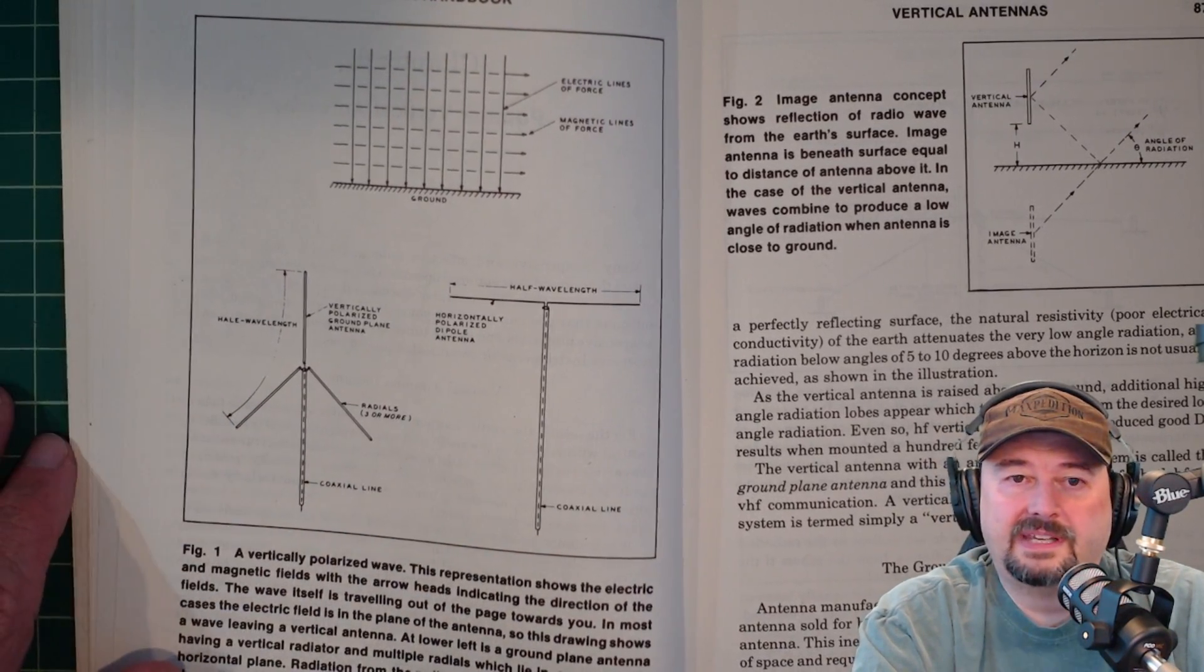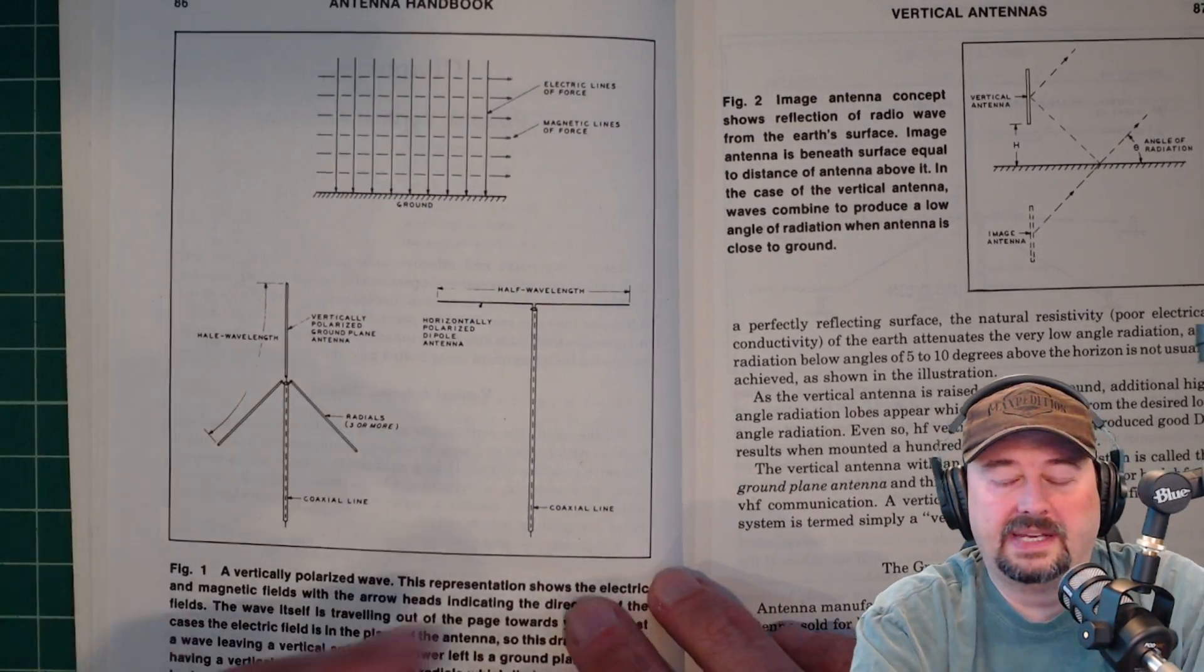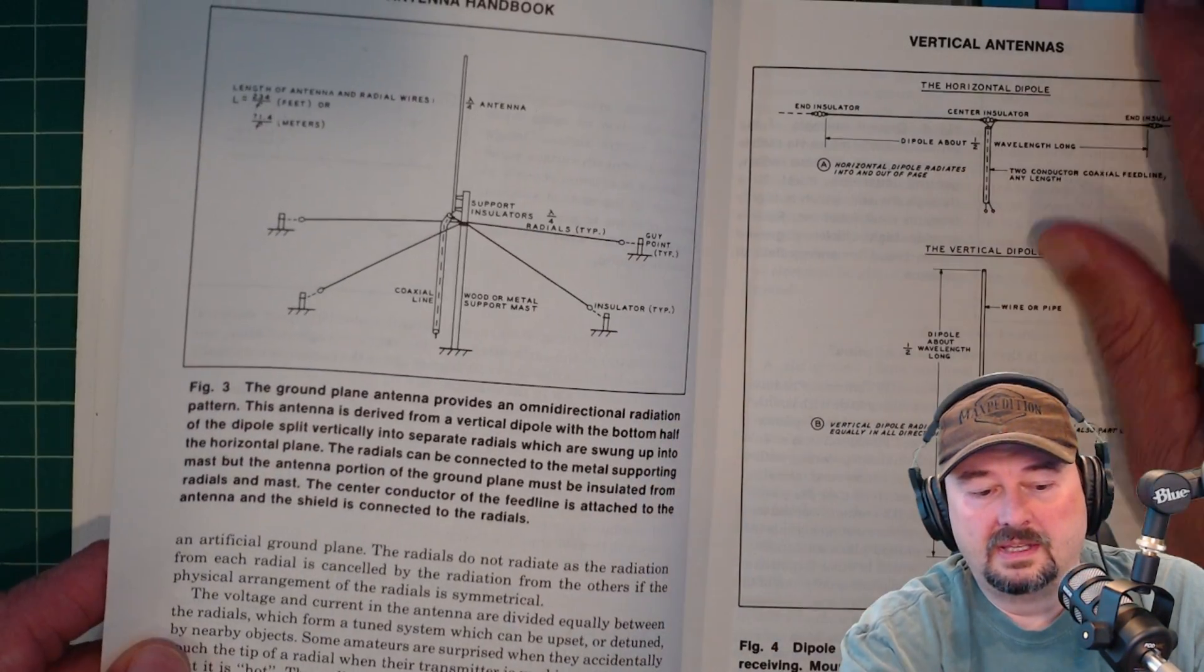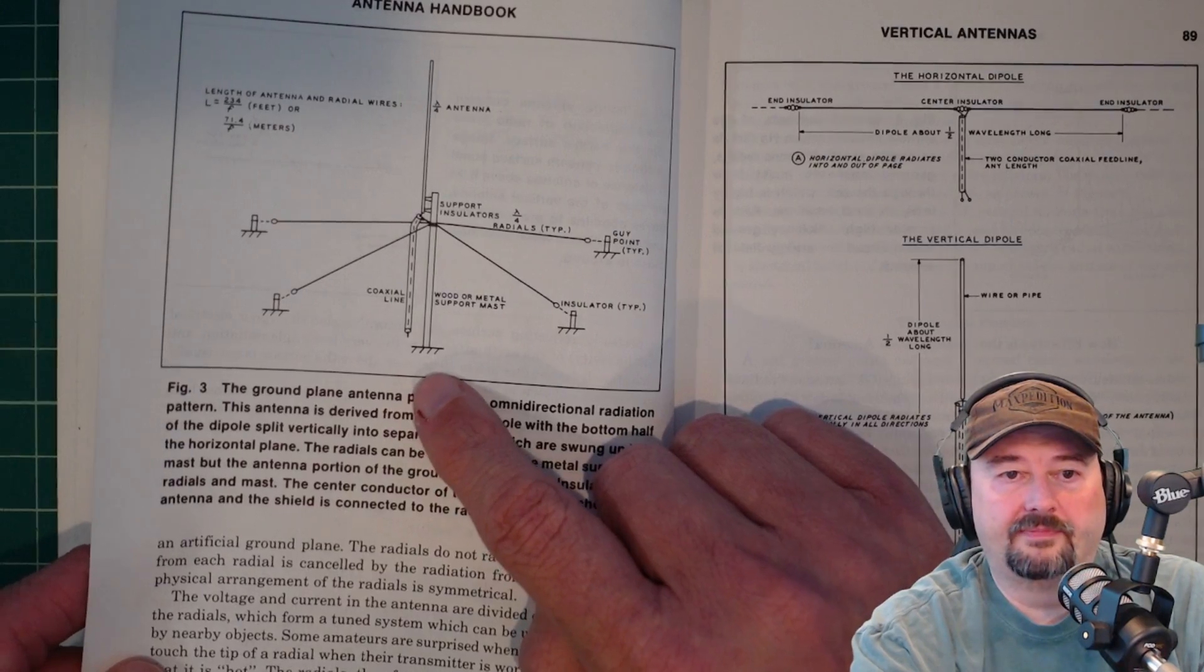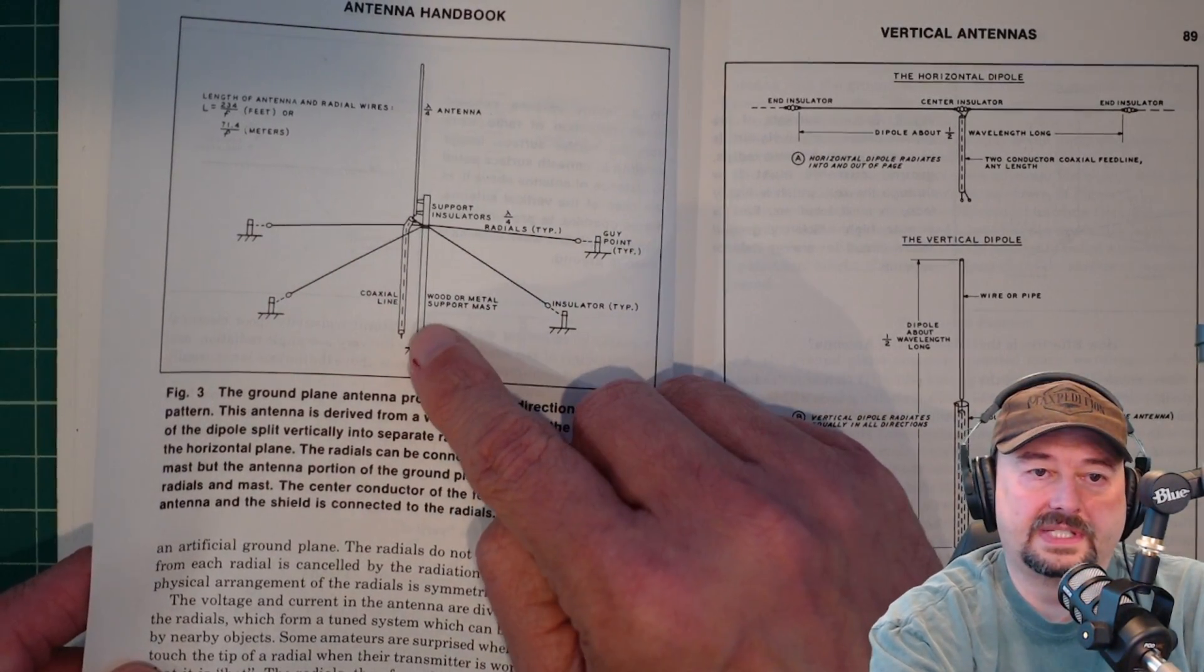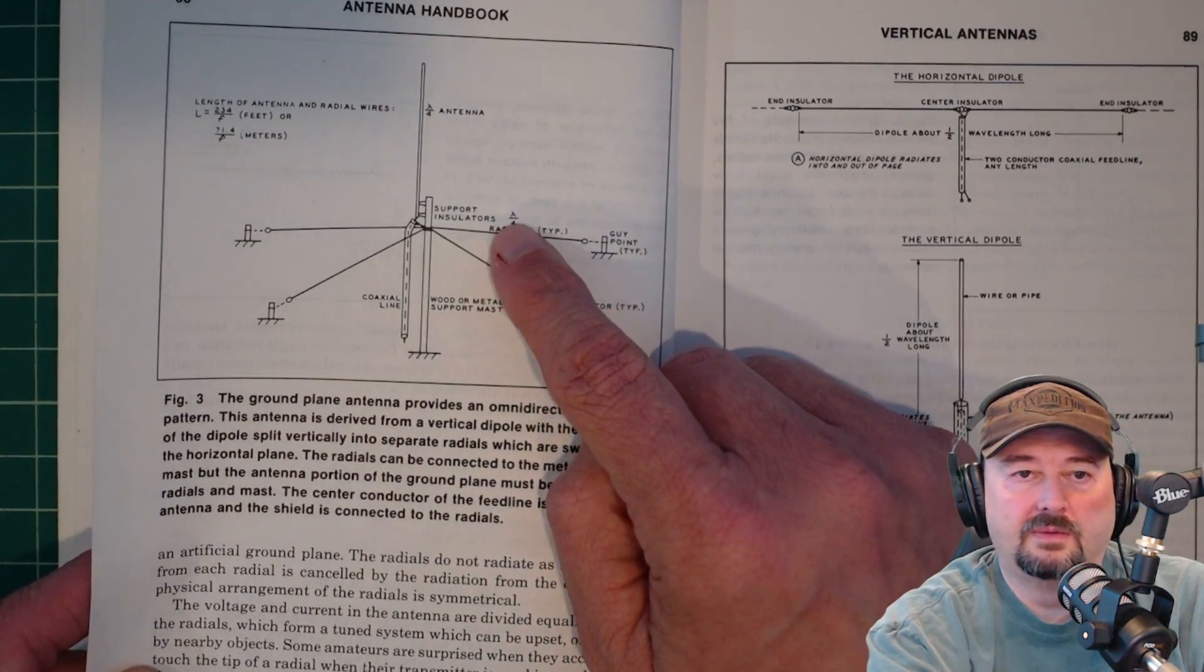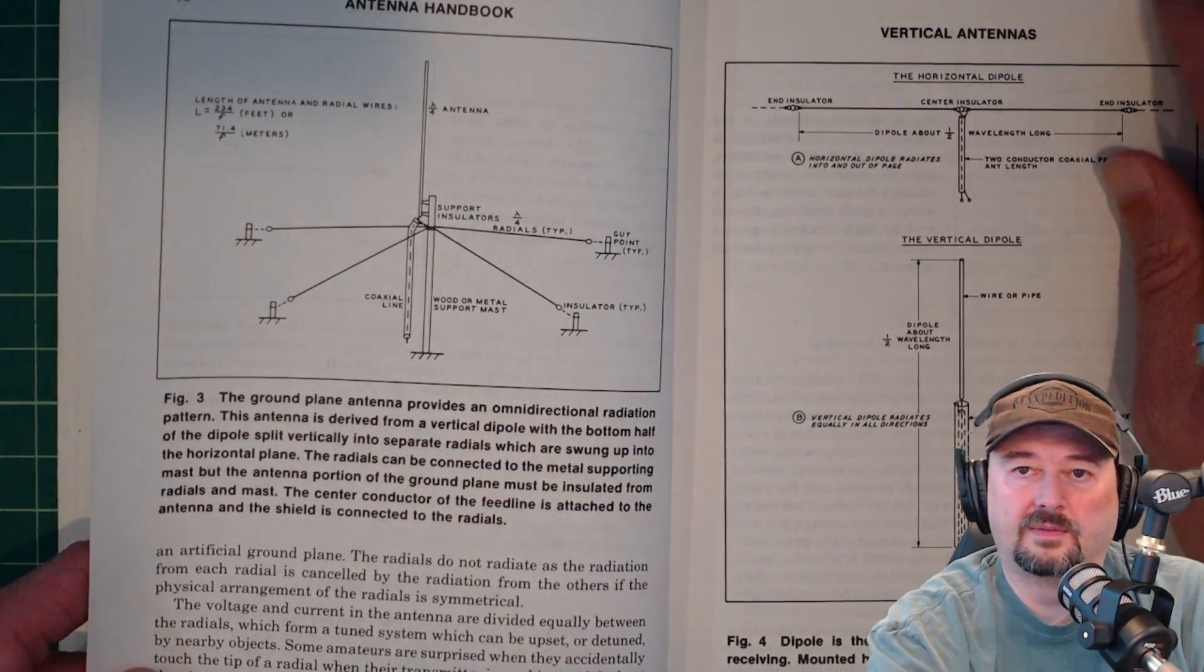Now, after reading through this, I'm thinking about building one for 10 meters because it would still be small enough and manageable enough to fit in the backyard, but we'll see. And he talks a lot about the ground plane being elevated off of the ground. This one, you can see, is fed with coaxial line, but then he has tuned radials here, which you need to do unless you have ground-mounted radials.